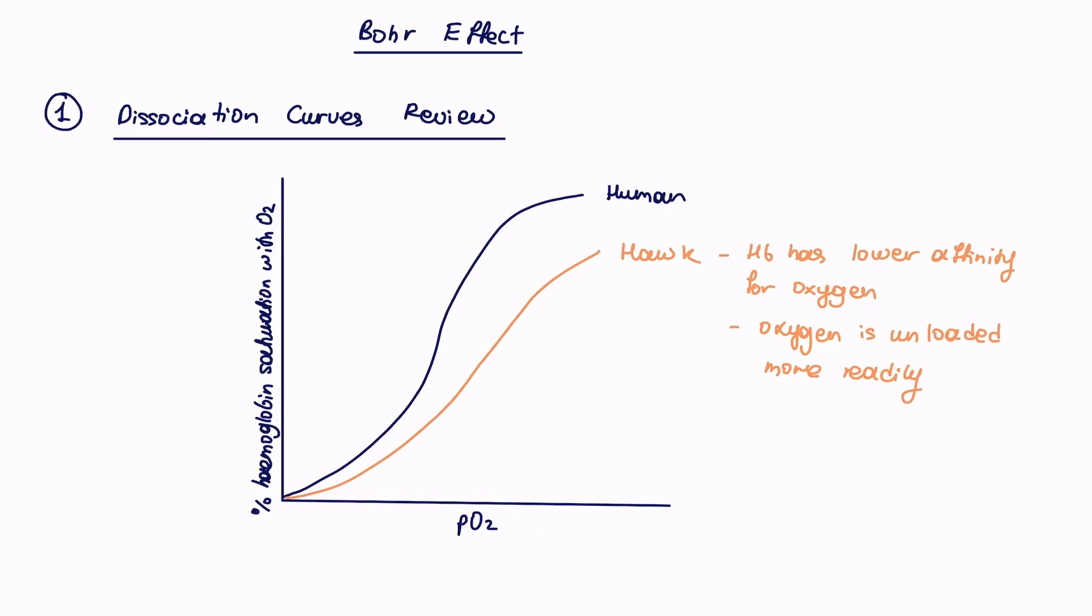On the contrary, there's another organism that lives in a very low oxygen environment, which is the lugworm. These are little worms that live on the beach in the sand, and due to the tides going up and down, this results in a low oxygen environment. The curve is shifted to the left compared to the human hemoglobin dissociation curve. In this case, hemoglobin has a higher affinity for oxygen, so oxygen will be loaded more readily, and loading means binding of oxygen to hemoglobin.